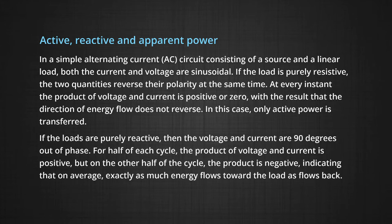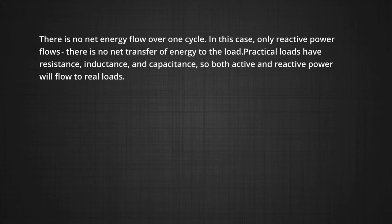If the load is purely reactive, the voltage and current are 90 degrees out of phase. For half of each cycle the product of voltage and current is positive, but on the other half it is negative, indicating that on average exactly as much energy flows toward the load as flows back — there is no net energy flow over one cycle, and only reactive power flows. Practical loads have resistance, inductance, and capacitance, so both active and reactive power flow to real loads.